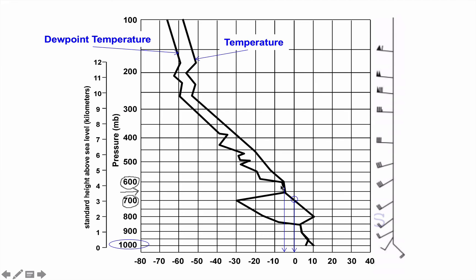What's the dew point temperature at 650 millibars? If 600 is here and 700 is there, 650 is right in between. The temperature and dew point temperature are the exact same at that level, so the dew point temperature is around minus 5 degrees Celsius. The dew point depression is temperature minus dew point, so at 650 millibars it's 0. At 800 millibars, the dew point depression is about 25 degrees — that's very dry air.